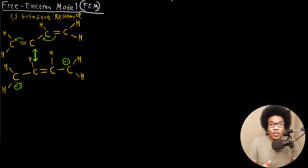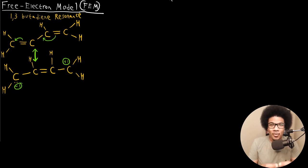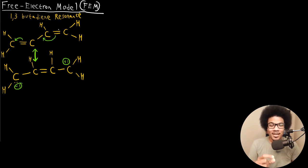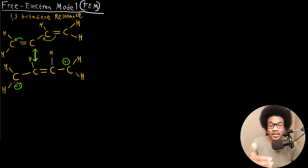In this video, we're going to discuss the free electron model. The free electron model is an interesting, direct application of the one-dimensional particle-in-the-box that we've introduced so far. Essentially, what we're going to do is use our one-dimensional particle-in-the-box energies in order to calculate the excited states in a linear organic molecule.